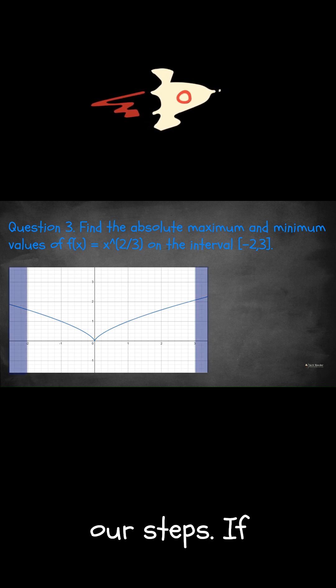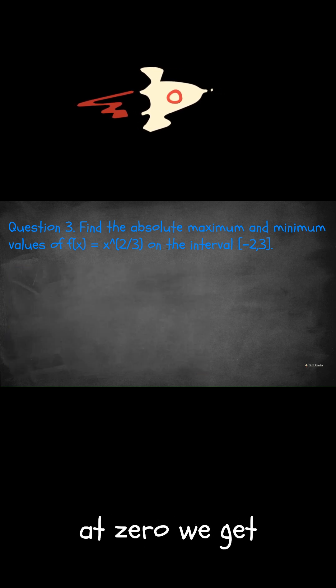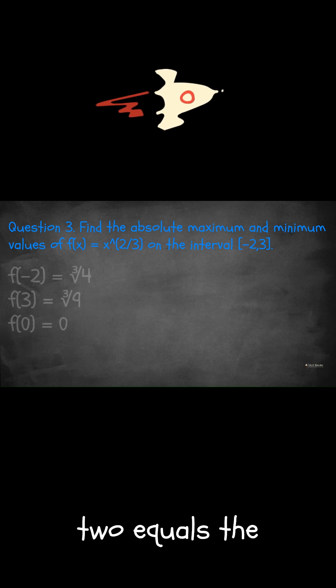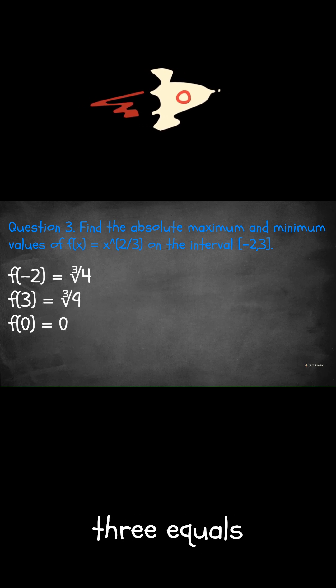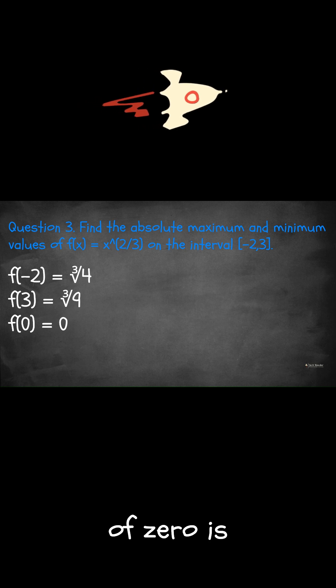Let's continue with our steps. If we evaluate the function at the endpoints and at 0, we get f of negative 2 equals the cube root of 4, f of 3 equals the cube root of 9, and f of 0 is equal to 0.